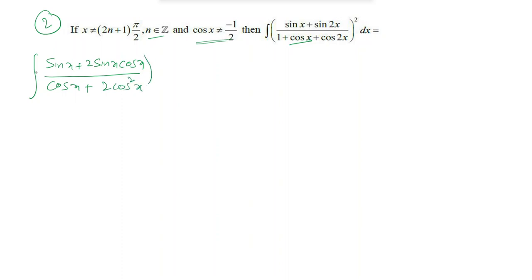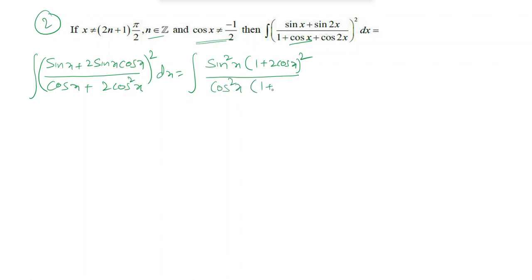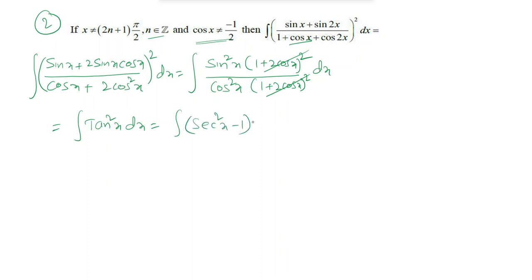The denominator 1 + cos2x equals 2cos²x, so the expression simplifies. After cancellation, the integral reduces to integration of tan²x dx, which equals integration of (sec²x minus 1) dx. Integrating gives tan x minus x plus c. This is the required answer.